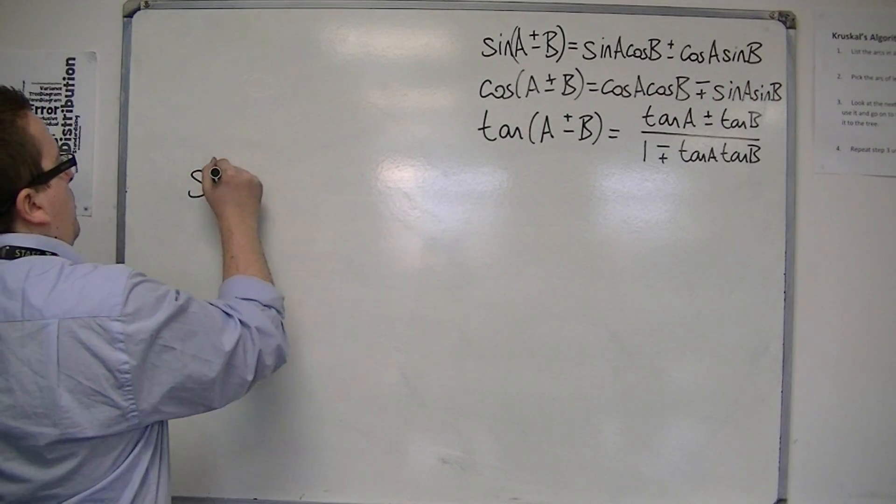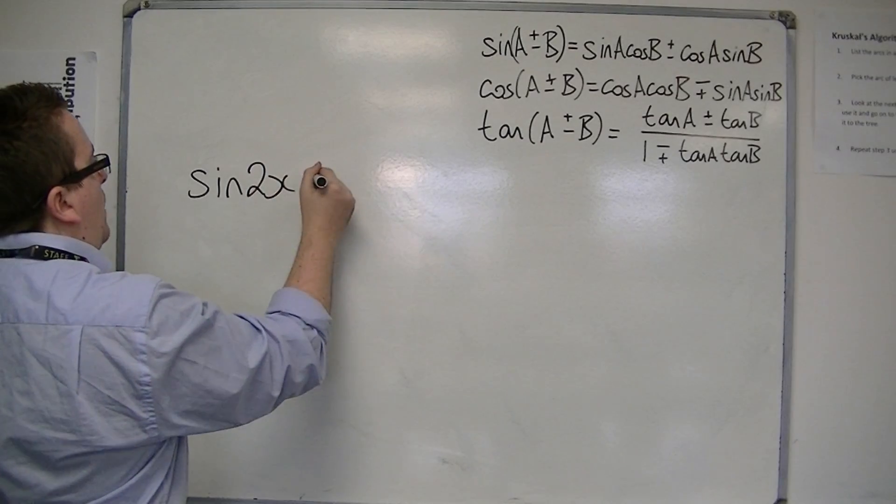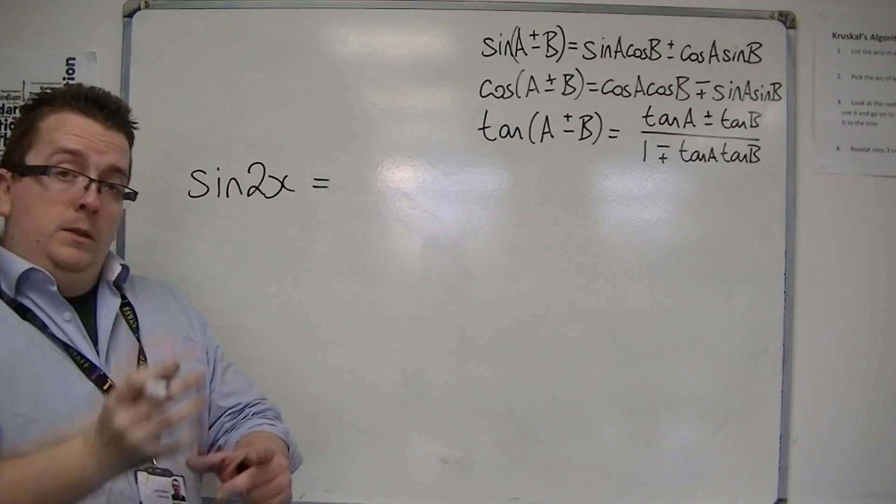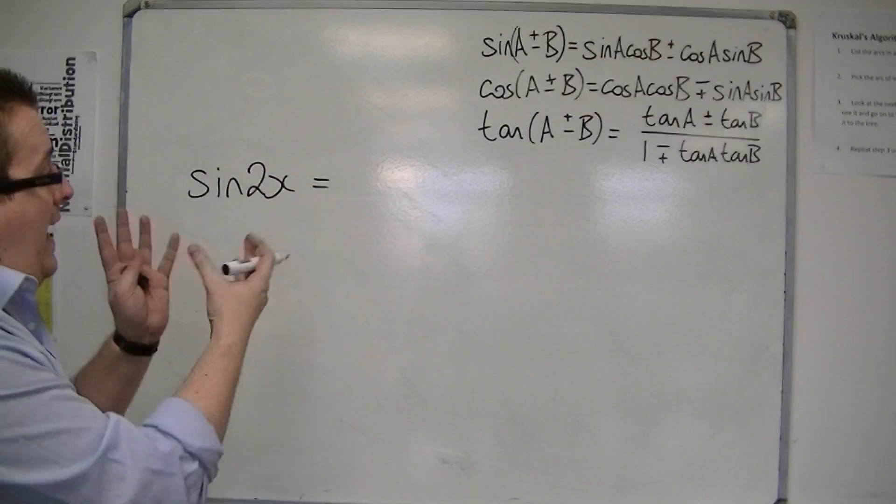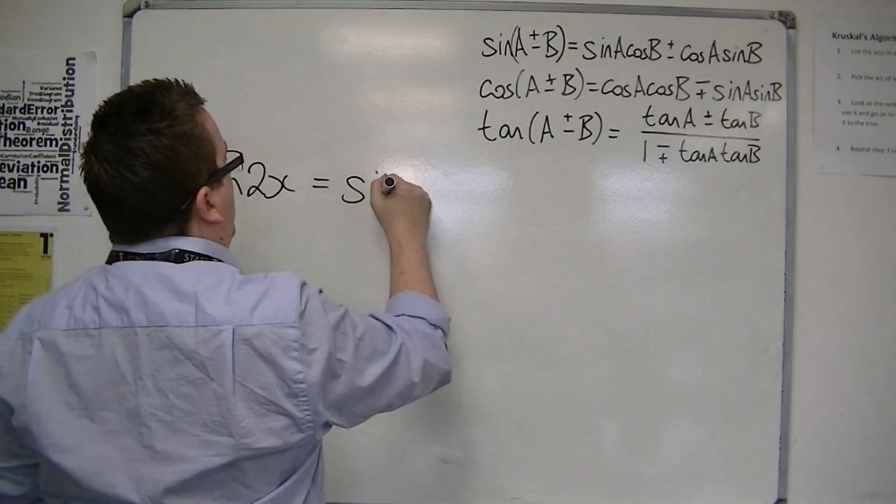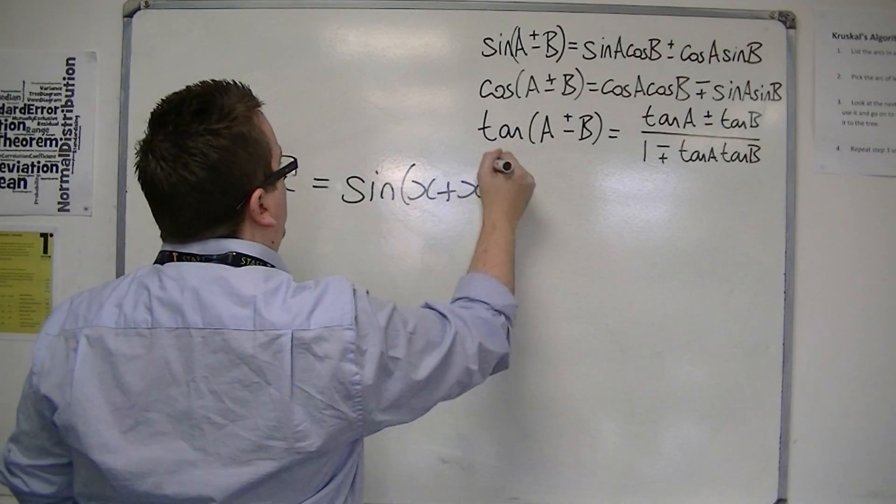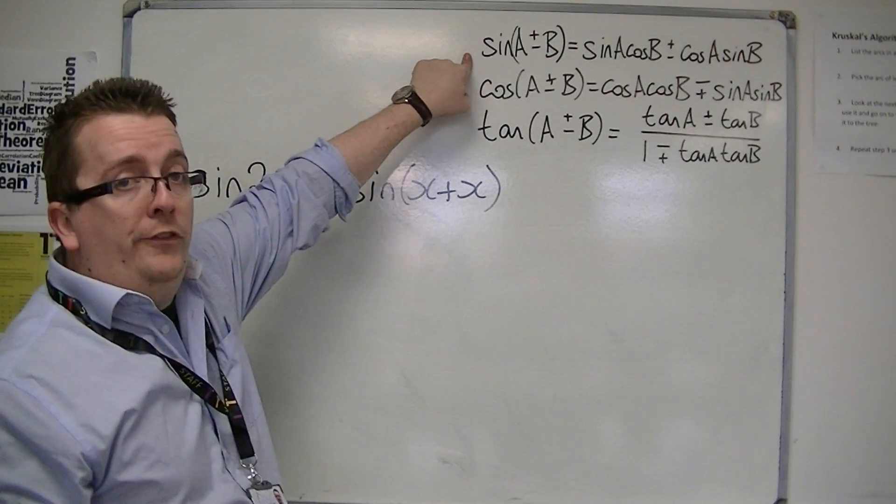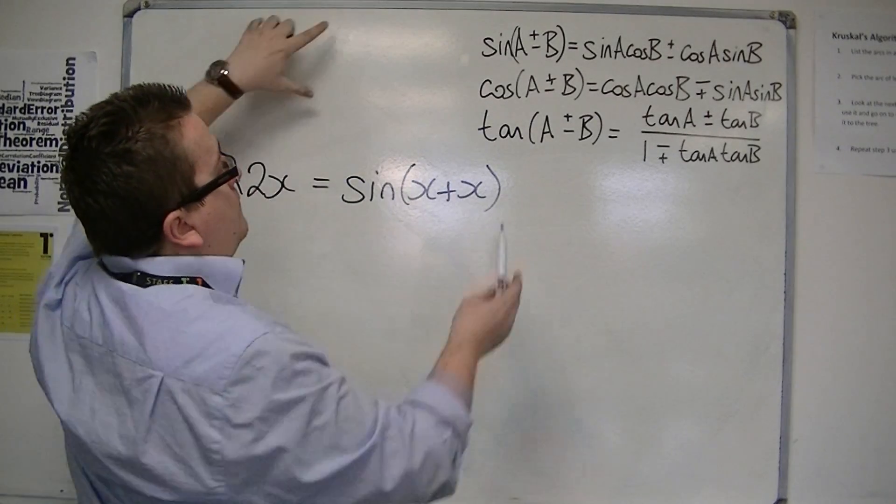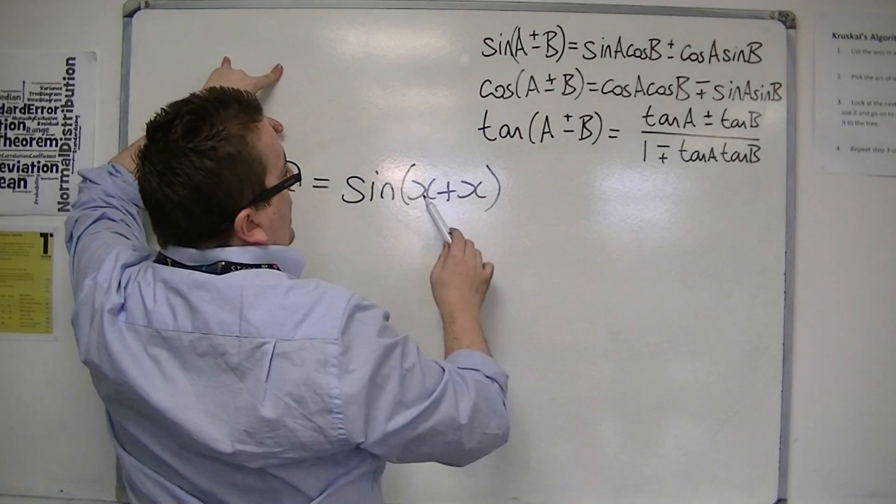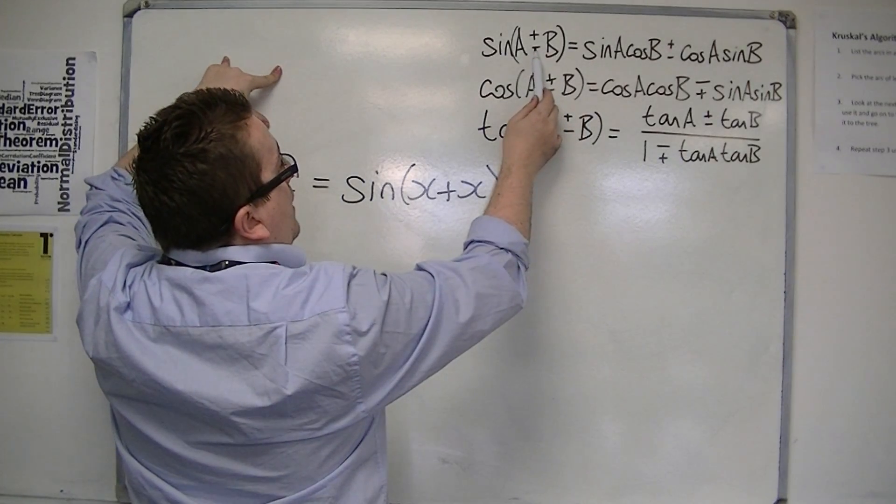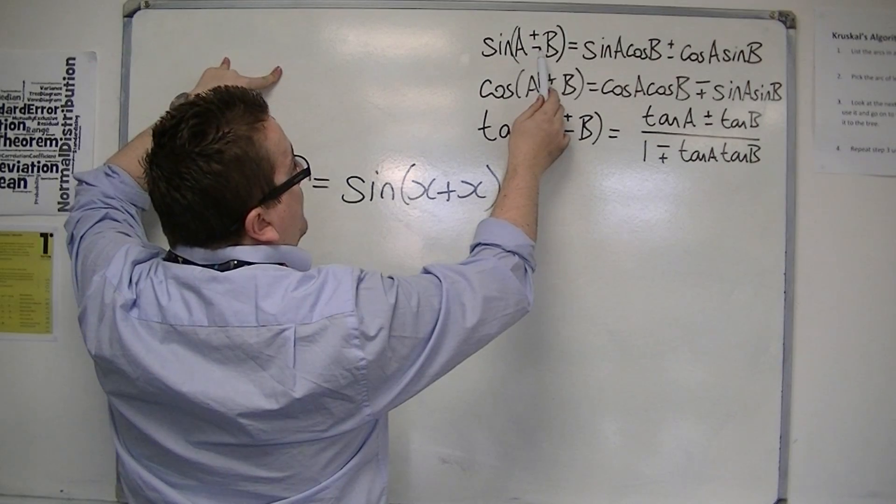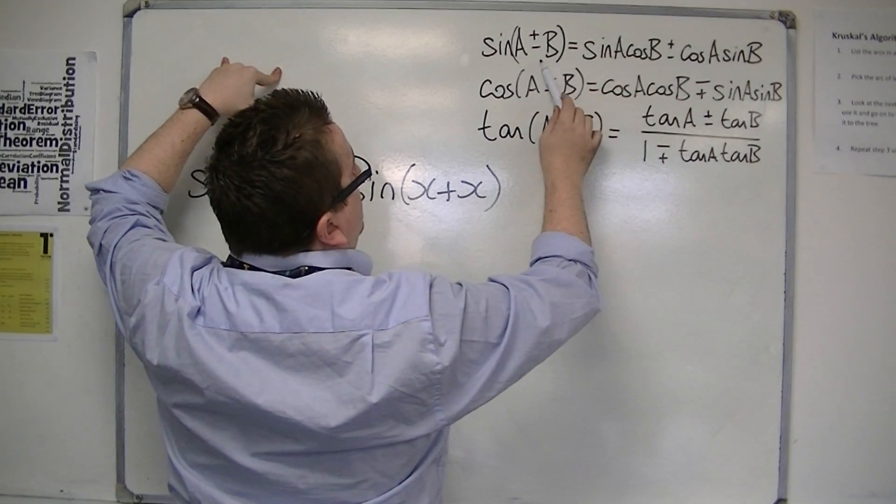The first one that we want to work with is sine 2x. Now, 2x is x plus x, so you can write that as sine of x plus x, and then compare that with the first formula that we have. It would mean that the a is x and the b is x, and we have a plus there rather than the minus.